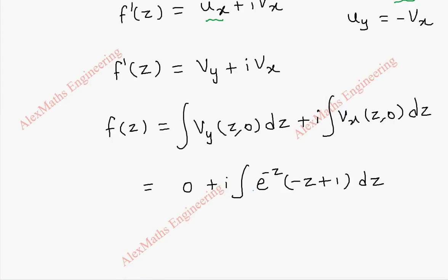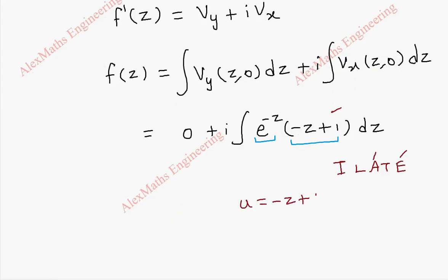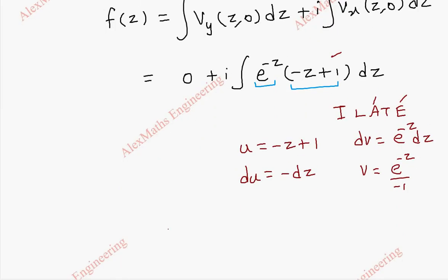And this we have to follow the integration by parts. So we have two functions. Using ILATE method, we identify one is algebraic, this is algebraic, this is exponential. And u is minus z plus 1, dv is e power minus z dz. This derivative becomes minus dz. This integration is e power minus z by minus 1. Now using u v minus integral v du. u is minus z plus 1, and there is a i outside. Open a big bracket, minus z plus 1 into e power minus z by minus 1, minus integral e power minus z by minus 1 into minus dz.